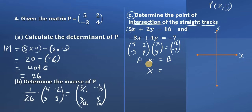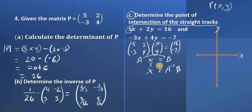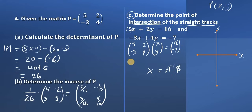Notice we have the matrix in the form of what we call the matrix equation Ax equals B, where A is the coefficient matrix, x is the variable matrix, and B is the constants matrix. We want to make the variable matrix x the subject, so we transpose the A matrix to the other side and it becomes A inverse, multiplied by the B matrix. So x equals A inverse times B.